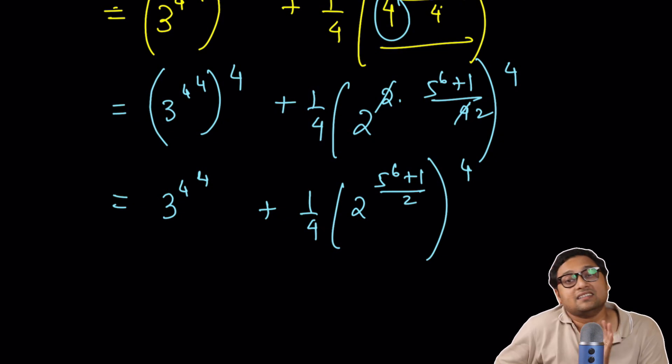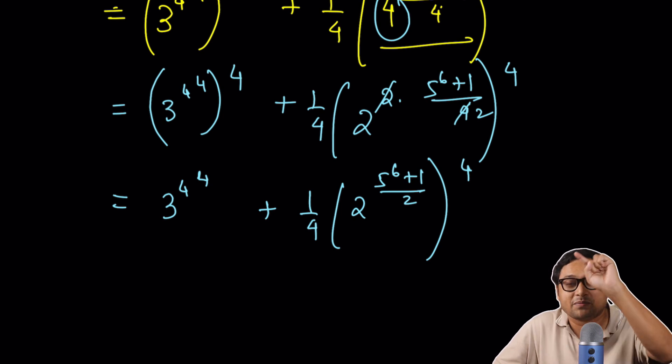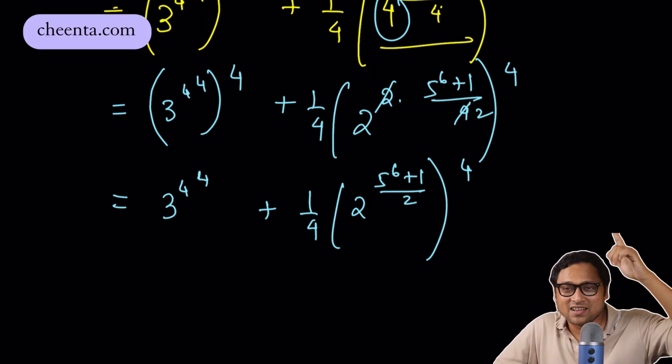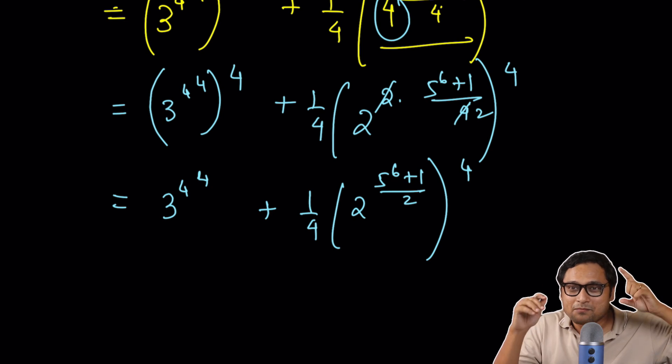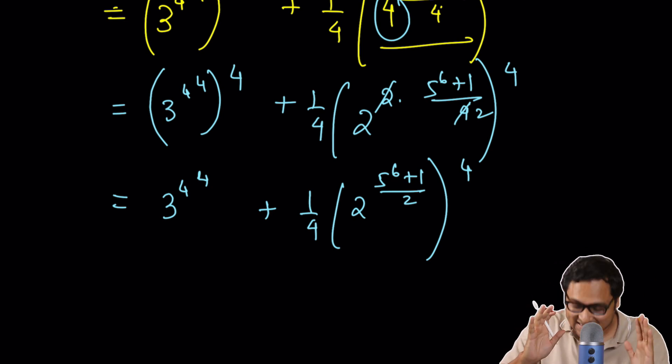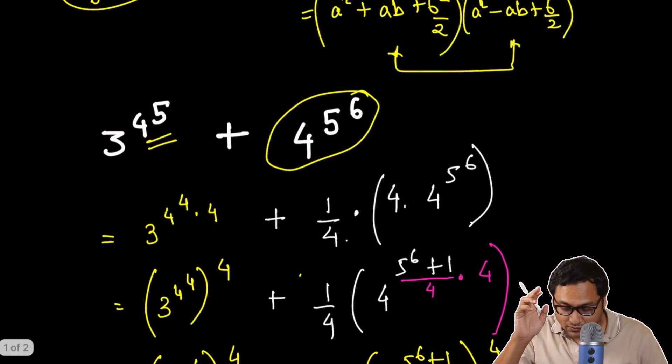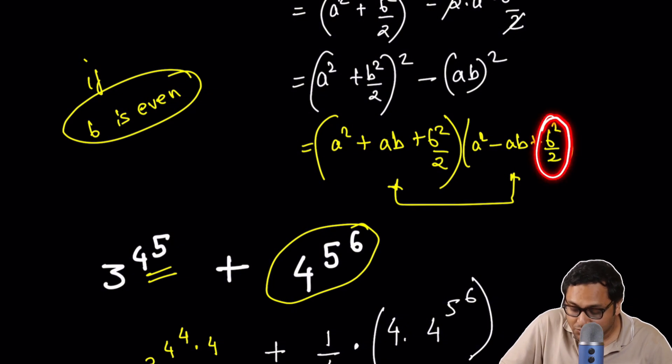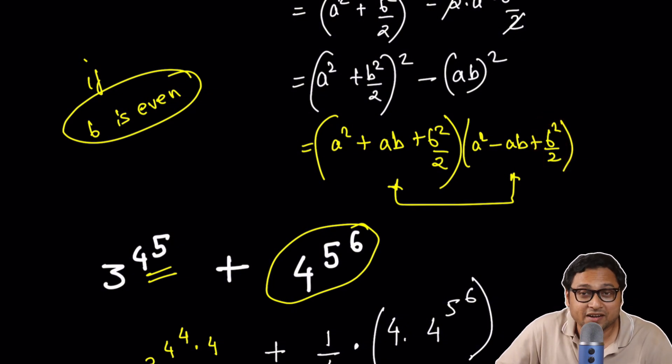Notice that this 5 to the power 6 is an odd number. You add 1 to it, that becomes an even number. So it's divisible by 2. So it's a proper power. It's not a fraction. It's a proper integer power. So we now have the final expression which is 4 to the power 4 to the power 4 plus 1 fourth of 2 to the power 5 to the power 6 plus 1 by 2 raised to the power 4. It's a complex expression, but it just works out very nicely. So this is factorizable. Only thing we need to check and this is a challenge problem that I will give you. Only thing that we need to check is whether b squared by 2 is a proper integer. So in the comment section, tell me why b squared by 2 will be a proper integer in this particular problem.